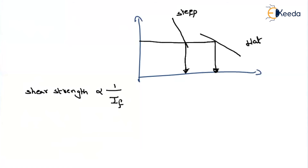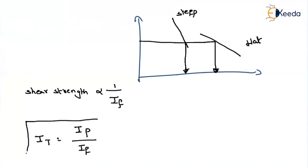That means, if you have a larger slope, the shear strength will be reduced. If the curve is flat, then your shear strength will increase. So, depending upon If, we can say which of two different soils is having the larger shear strength. The toughness index is nothing but the plasticity index divided by the flow index, and by using this parameter we can compare the shear strength behavior of two different soils.